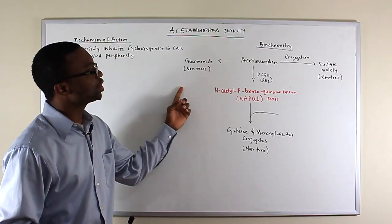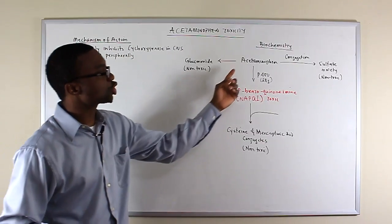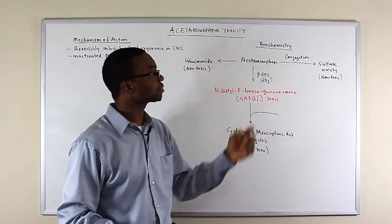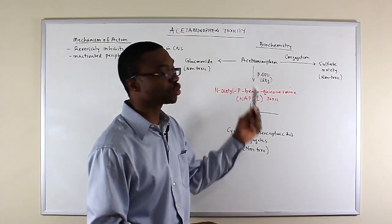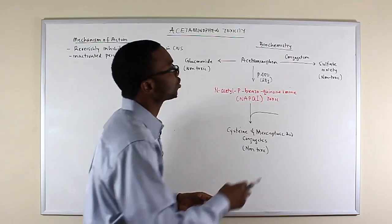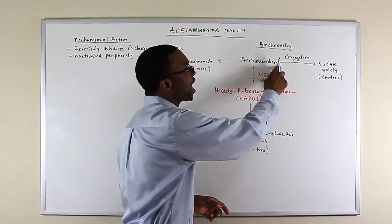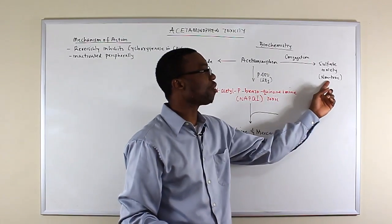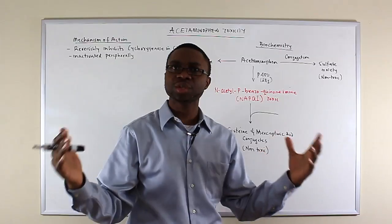The biochemistry of the metabolism of the drug starts with acetaminophen, and it often goes through two pathways. The first pathway goes through a conjugation pathway, and when it's conjugated, it becomes a sulfate moiety, which is non-toxic to the body.